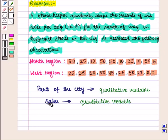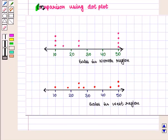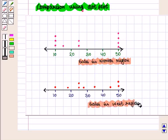Sales can be compared with numerical and graphical techniques. Here we will see its comparison using dot plot. This is the dot plot for the sales in north region and this is the dot plot for the sales in west region.